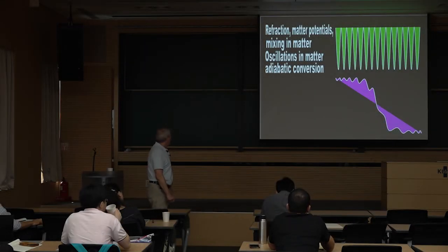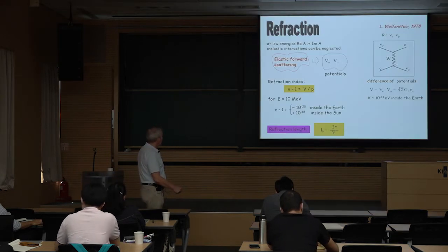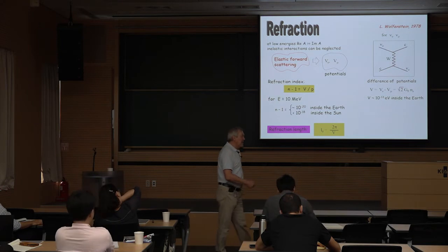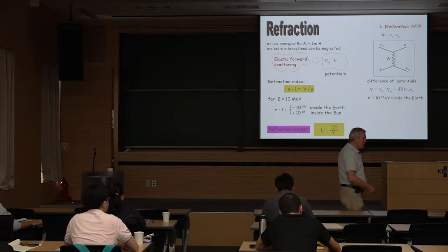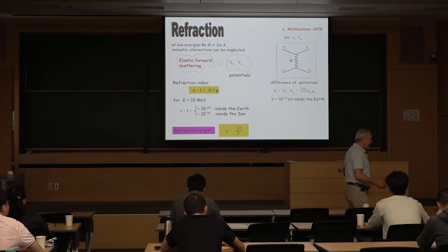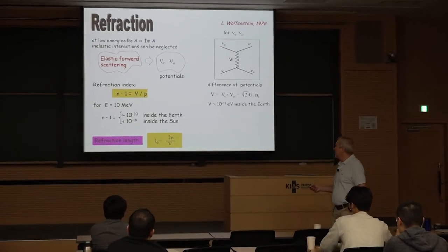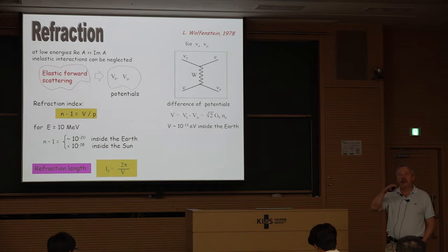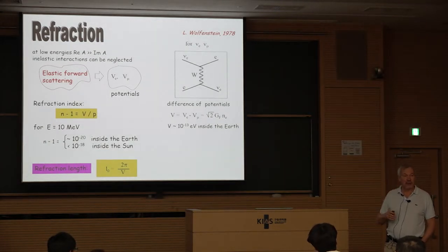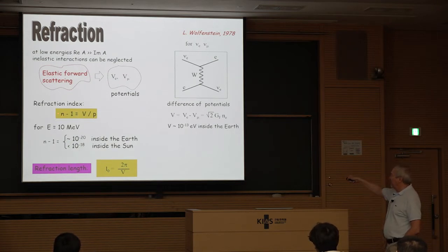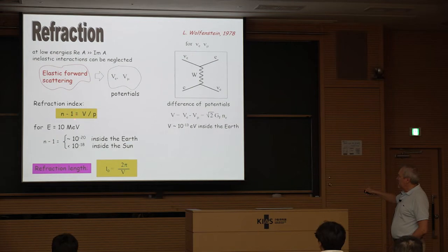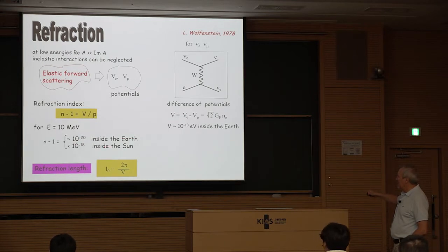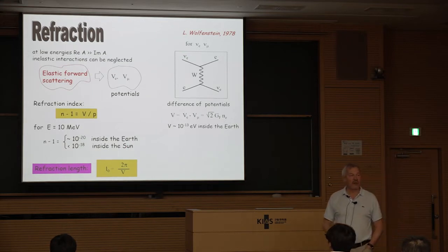This lecture covers matter effect oscillations and adiabatic conversion. Wolfenstein introduced matter effects as a refraction effect, the same as for photons propagating in matter, where they acquire a refraction index. The refraction index can be connected to a potential, so matter effects can be considered as propagation in a potential produced by particles in the medium. This deviation of n from 1 is extremely small — for 10 MeV neutrinos it is 10⁻²⁰ inside the Earth and 10⁻¹⁸ inside the Sun — and still amazingly important for neutrino oscillations.